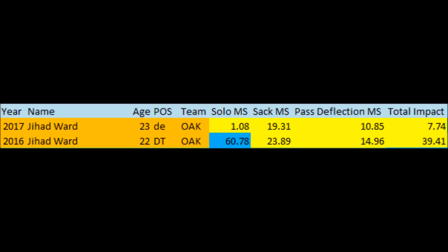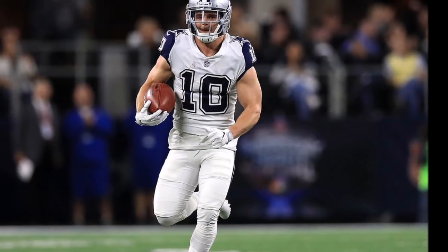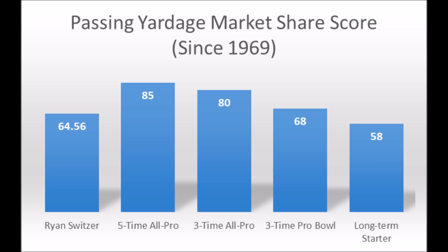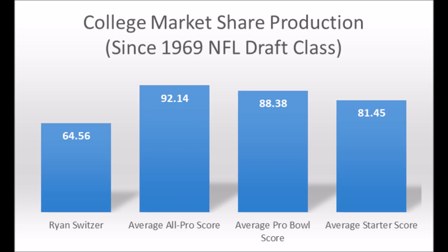The Raiders got Ryan Switzer — the wide receiver out of North Carolina — in return. Switzer had a 64.56 passing yards market share production score coming out of North Carolina. He did not hit the five-time all-pro, three-time all-pro, or three-time Pro Bowl production thresholds, making it unlikely he becomes a high-quality NFL wide receiver. He did hit above the long-term starter threshold, but the average long-term starter score is 81.45, and he's below that average.